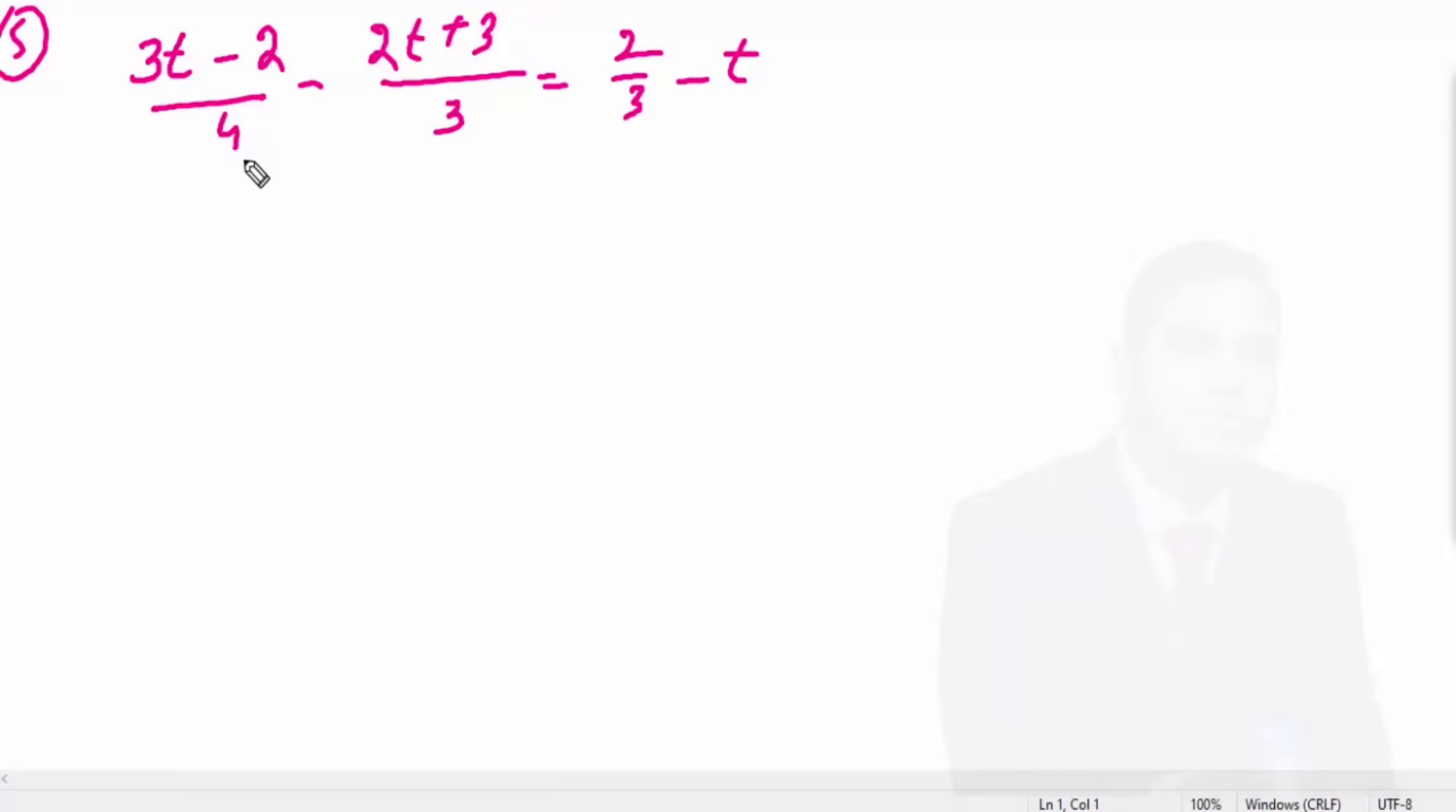So this is the answer. LCM of 4, 3, and 3 is equal to 12.